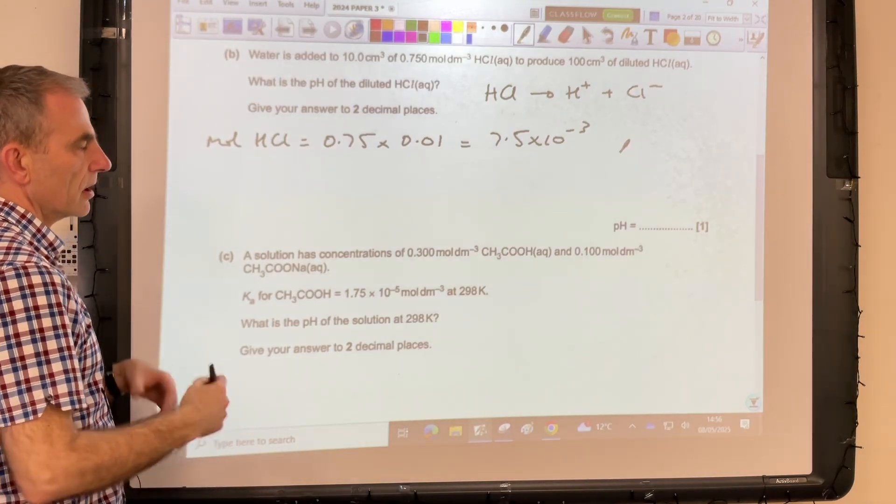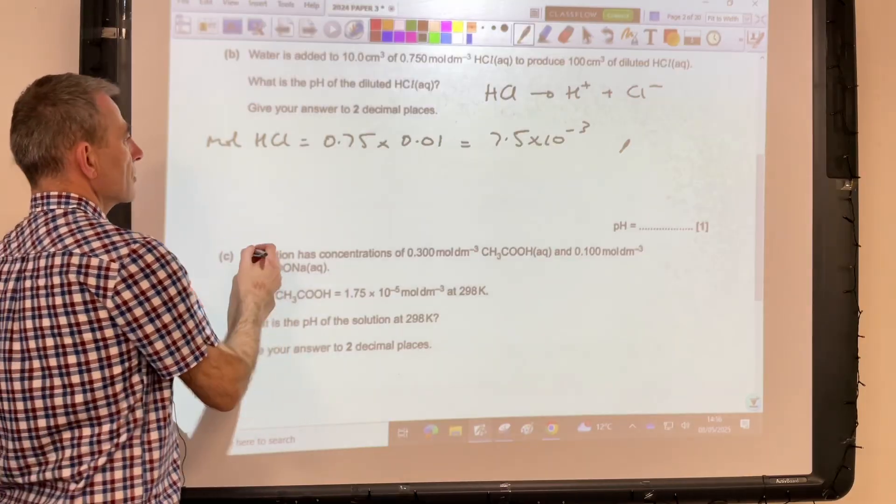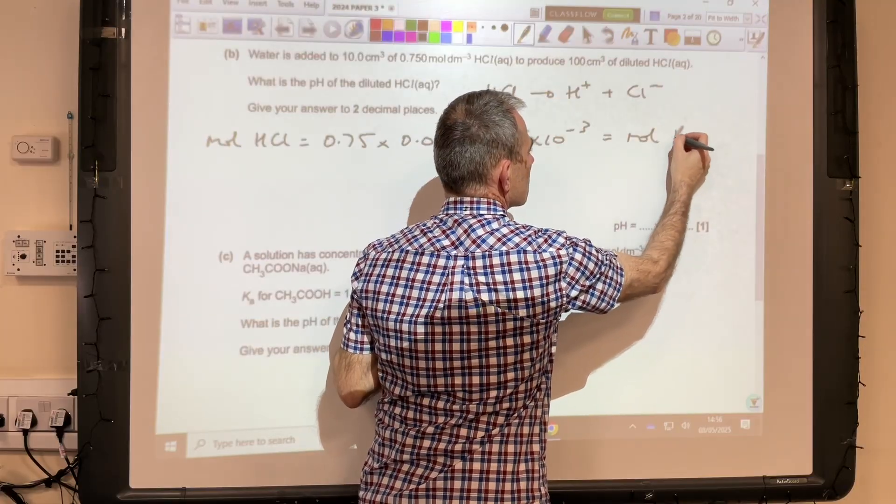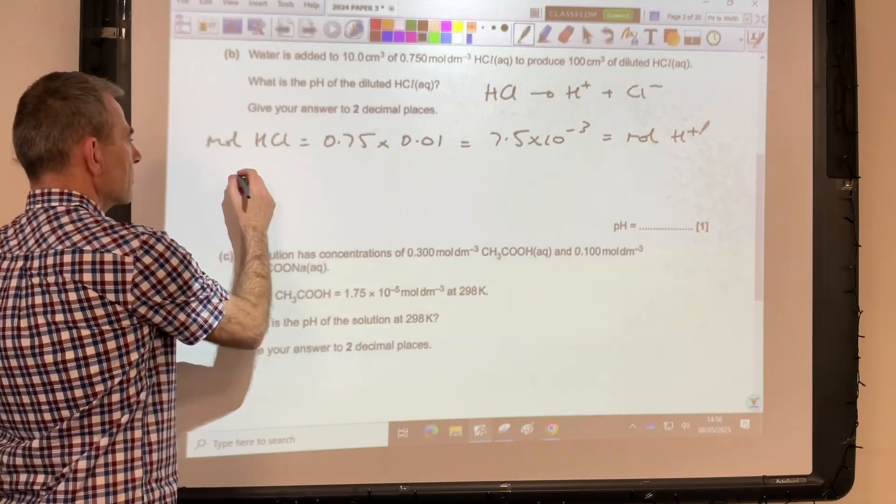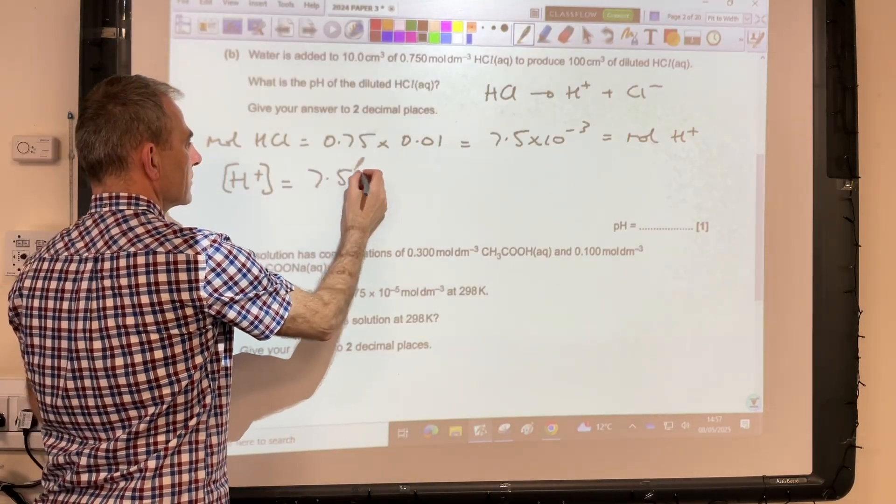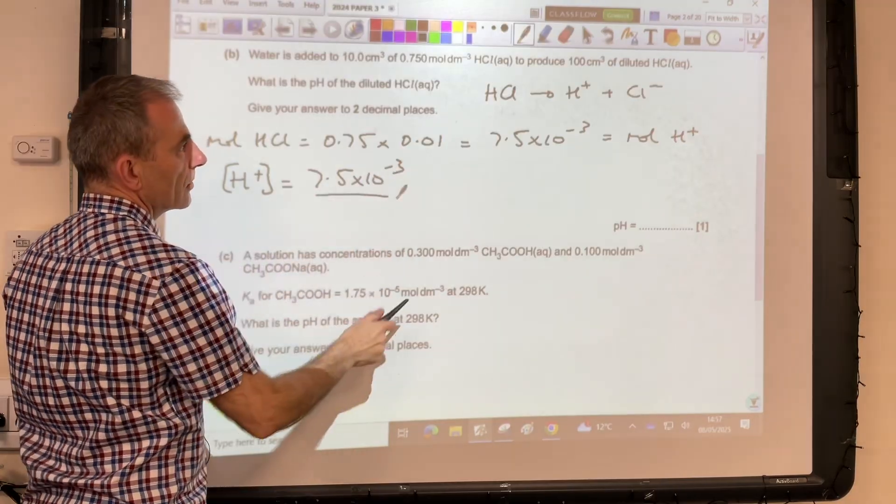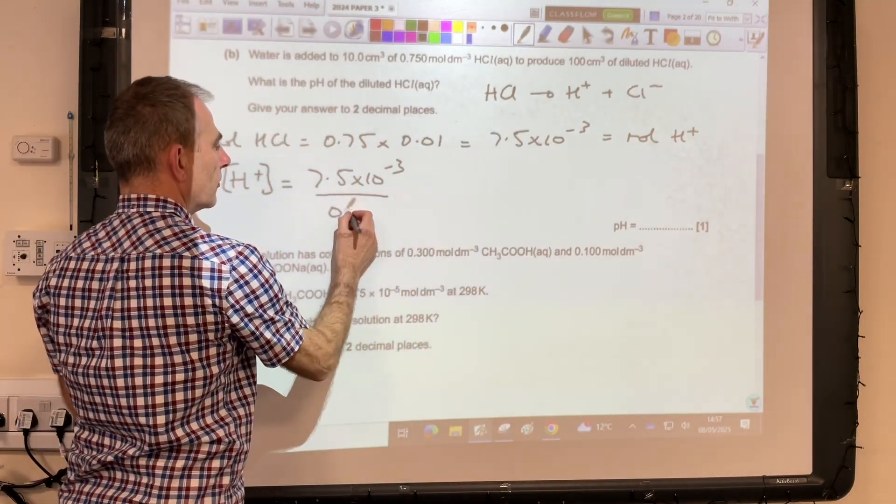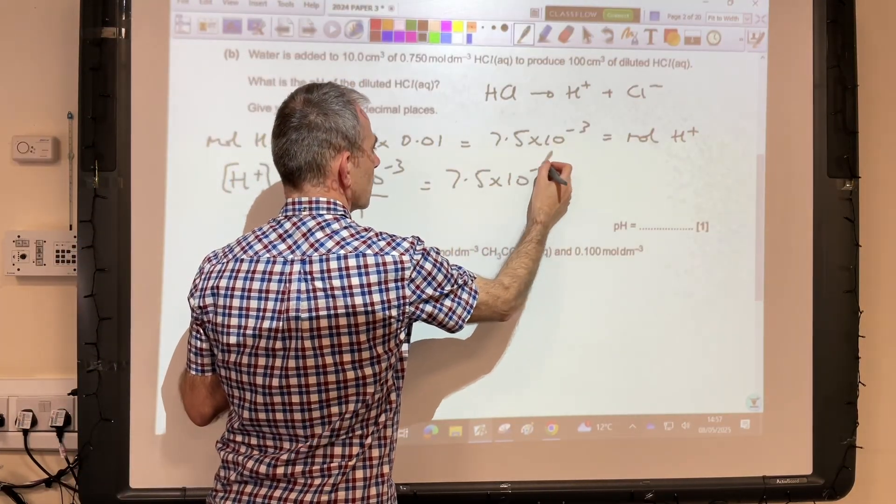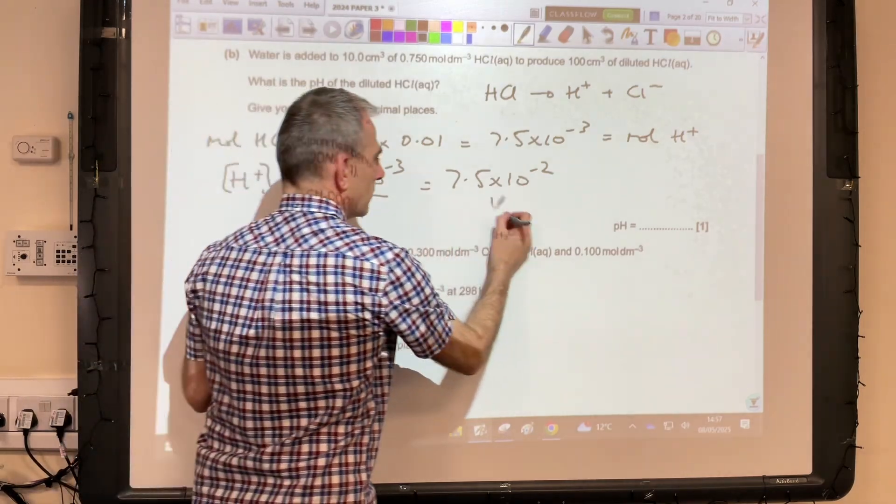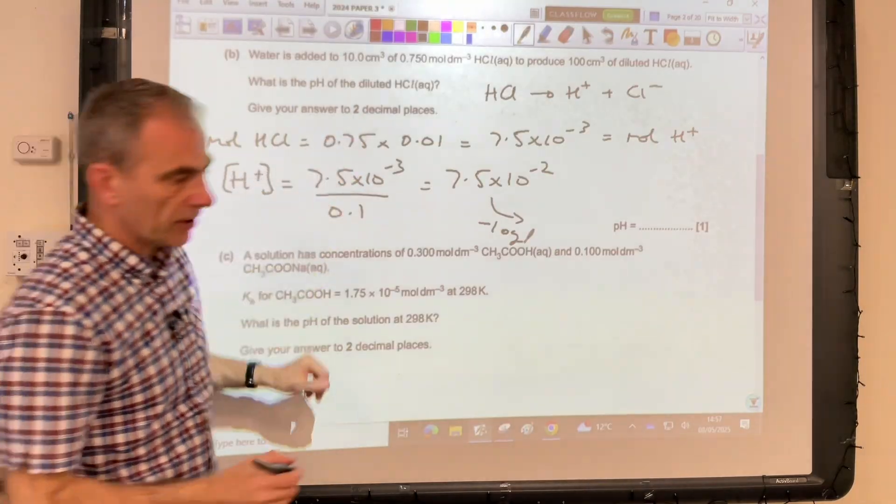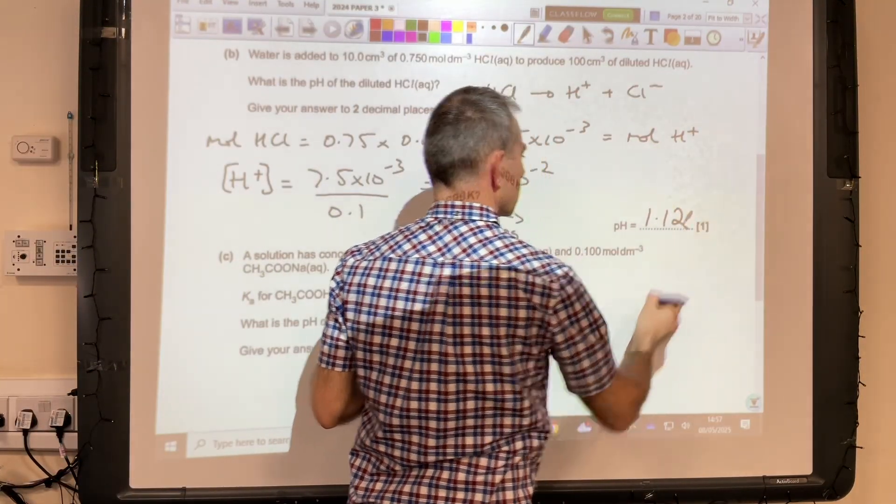We want to know how many moles of H⁺ ions we've got and then the concentration of them. The moles of H⁺ will be exactly the same, so equals moles of H⁺. The concentration of the H⁺ ions—that's what we need to calculate pH—is the moles divided by the volume. So it's 7.5×10⁻³ and the volume that they're in is 100 cm³, so that's 0.1 dm³. So 7.5×10⁻². Minus log that gives a pH, and they want this one to two decimal places: 1.12.